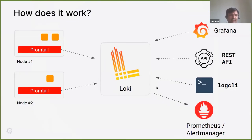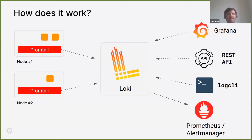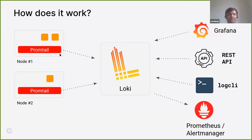Consider Loki as a black box — you can even run it as a single binary. To get logs into Loki, there's a client called Promtail built by us, which is similar to Prometheus. It does service discovery of your apps that are logging. You can run it with Kubernetes or as a single binary. Promtail would scrape the logs from your applications and send them to Loki. You can get logs out of Loki using Grafana, the REST API, or a LogCLI command-line client built by us.